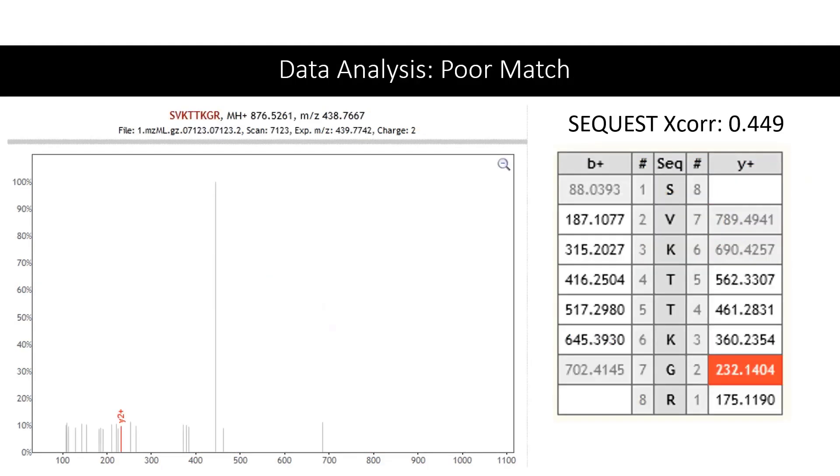On the other hand, this is an example of a poor match. The Sequest score for these spectra is 0.449, which tells us that it is unlikely that this experimental spectra corresponds to this peptide sequence.